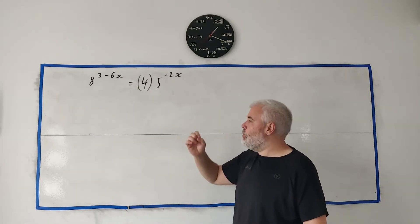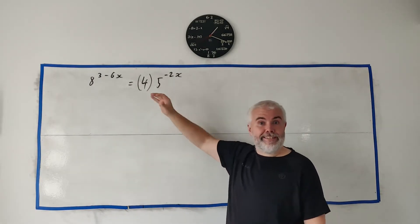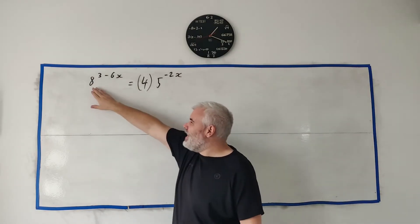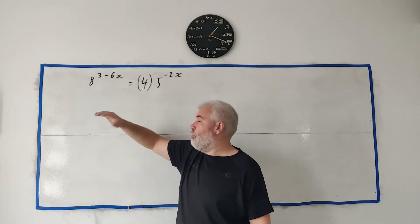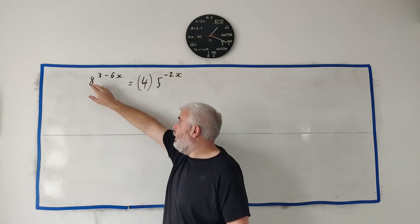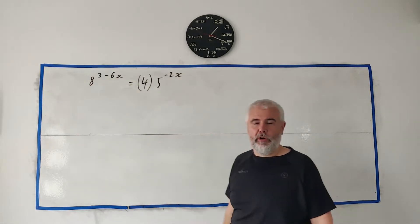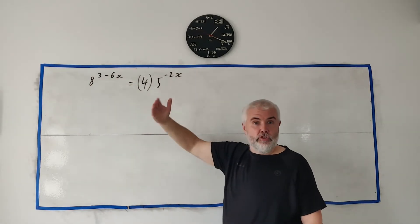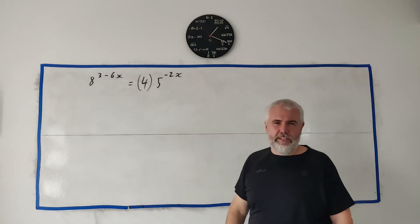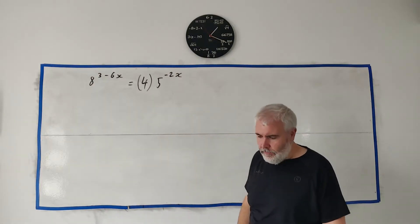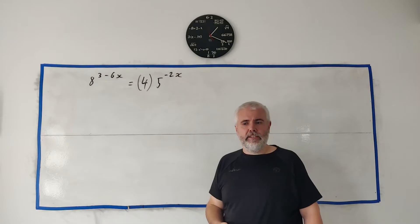The first way you should look at this question is to see if there's an easy method, if there's an easy way to get all the bases to be the same. For example, 8 could be turned into 2 to the power 3, 4 could be turned into 2 to the power of something, but 5 not so easily, so there's no easy way to do it that way.